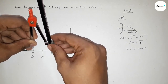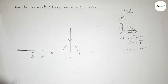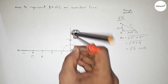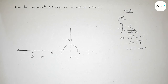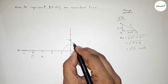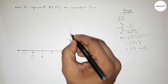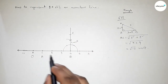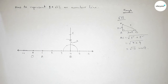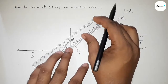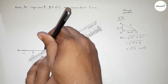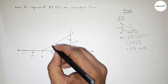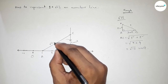Taking two unit length with the compass and putting the compass on point B, cutting here — so this is two unit length. Taking this point as C. Now joining A and C to get the hypotenuse, and AC is obviously root 13 units.